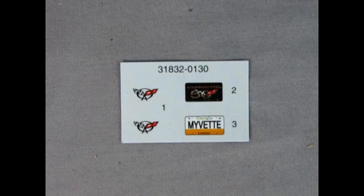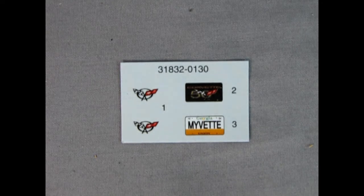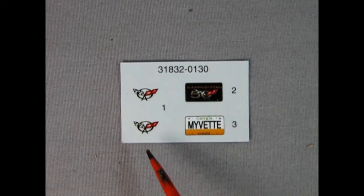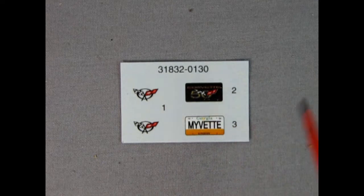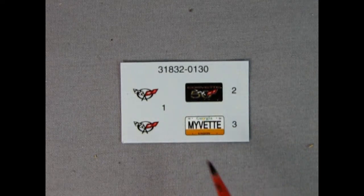Here we've got our decal sheet for this great model kit and as you can see there's really not much decals here. You got your front and back Corvette emblem and then a 50th anniversary license plate and a Georgia MyVet license plate. And that's it!